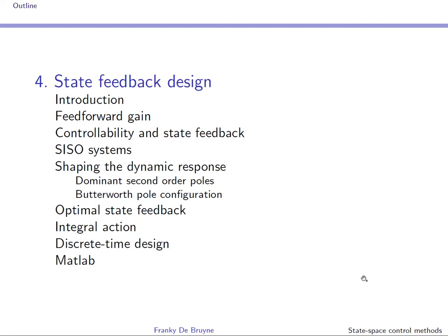In section 4 we'll talk about state feedback control. The control law is composed of a feedforward gain acting on the reference or set point, and a feedback gain acting on the states. The dynamic response in closed loop is shaped by pole placement, meaning the feedback gain is obtained by choosing appropriate locations for the closed-loop poles. We will also investigate optimal state feedback, and we'll see how to impose integral action and implement the control law in discrete time.